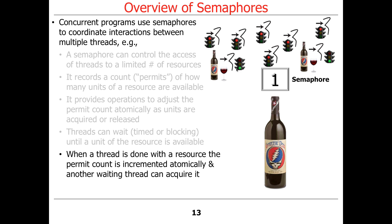You can replace bottles of wine with Palantiri, or with beach volleyballs — you can use whatever you want as an example. If you've got a shared set of resources that are finite in number, and you have more things that want them than there are available, that's the scenario a semaphore handles.